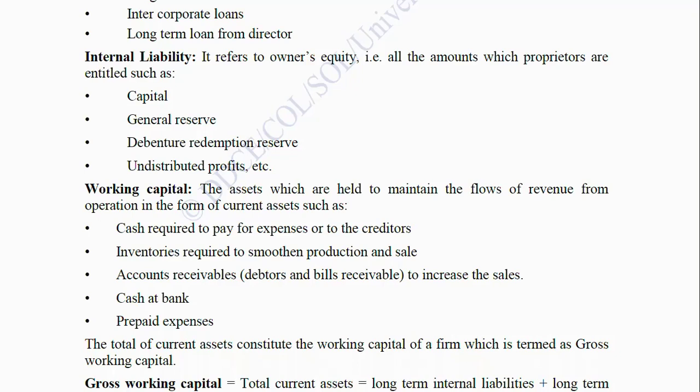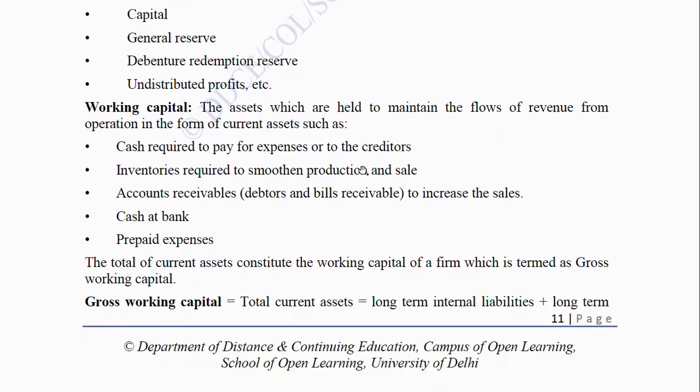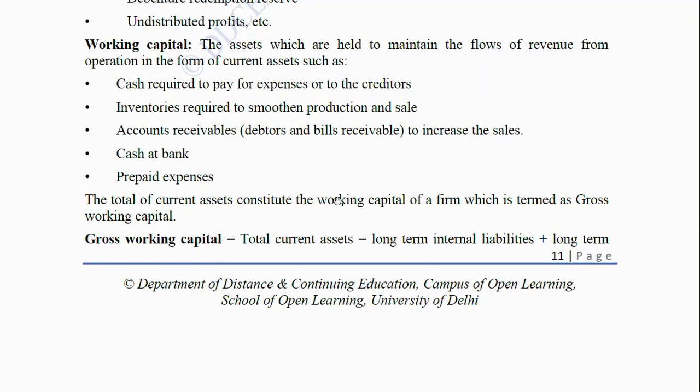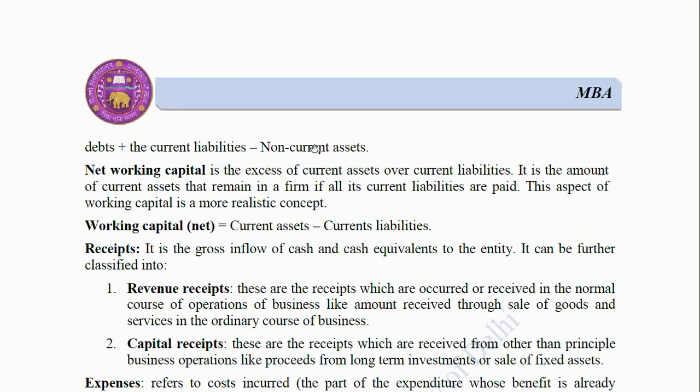The total of current assets constitutes the working capital of the firm, which is termed as gross working capital. Net working capital is the excess of current assets over current liabilities — it is the amount of current assets that remain in a firm if all its current liabilities are paid. Net working capital = Current assets minus current liabilities.